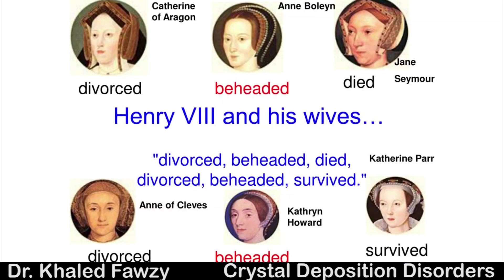Henry VIII had six wives. As a Catholic, he could only marry one, but he divorced the first wife, then beheaded, died, and divorced, beheaded, survived — a mnemonic for the fates of his six wives.